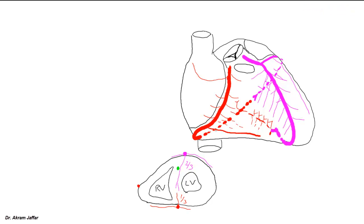Regarding the conductive system of the heart, the atrioventricular bundle is supplied by the septal branches of the anterior interventricular artery. The SA node, located at the right side of the entrance of the superior vena cava into the right atrium, is supplied by the SA nodal branch of the right coronary artery in about 60% of cases. The AV node, located in the interatrial septum, is supplied by the AV nodal branch of the right coronary artery in about 80% of cases. In about 40% of cases, the SA node receives a branch from the left coronary artery, and in about 20% of cases, the AV node is supplied by the circumflex of the left coronary artery.